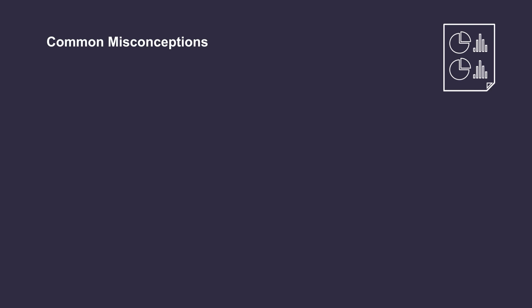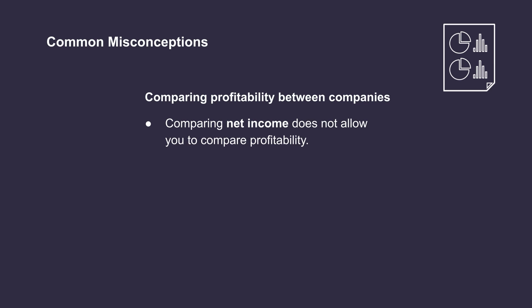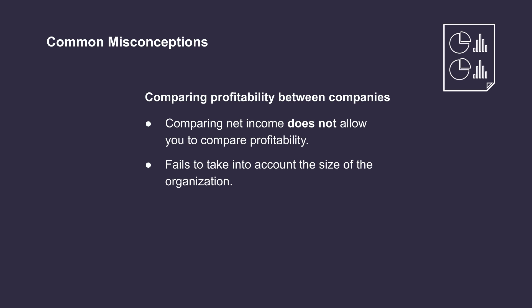Now that we understand how to calculate three profitability ratios, let's clear up a common misconception. Many people think that you can assess two companies' profitability by comparing their net income amounts. However, this is not always the case. For example, if company A earned $100,000 in profit, and company B earned $50,000, it would be tempting to say that company A has stronger profitability. However, what if company A is a much larger organization than company B? Looking at the dollar figure alone fails to take into account the size of the organization, and comparing the two is like comparing apples to oranges.